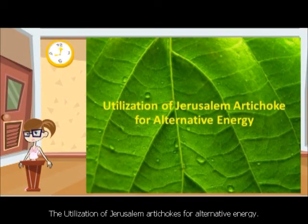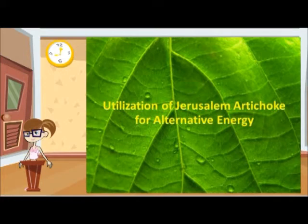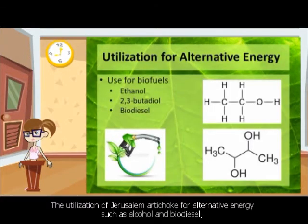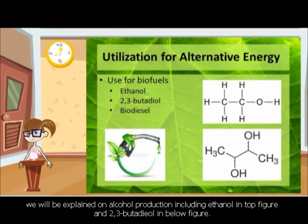The utilization of Jerusalem Artichoke for alternative energy, such as alcohol and biodiesel. We will explain alcohol production, including ethanol shown in the top figure, and 2,3-butanediol shown in the bottom figure.